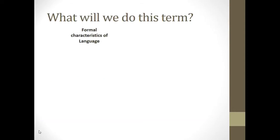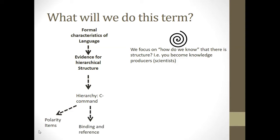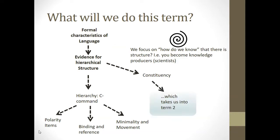We started out in the first term looking at some of the formal characteristics of language, and one of those characteristics is asymmetric hierarchical structure. We spent the next little bit of time looking for evidence of the structure, primarily focusing on the theoretical notion of C-command. We looked at polarity items, binding and reference, and minimality and movement — three empirical areas which give us evidence of C-command and thereby of hierarchy.